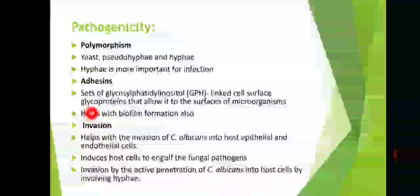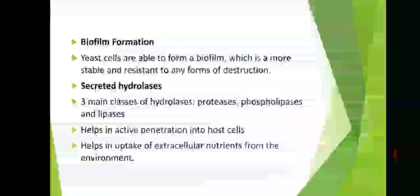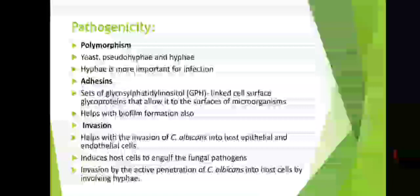Next is biofilm formation. A biofilm is a group of microorganisms that come together and form a rigid structure which is resistant to any external pressure. That structure is called a biofilm. It is basically a polysaccharide structure formed by a group of microorganisms coming together to resist external pressure. Yeast cells are able to form a biofilm which is more stable and resistant to any form of destruction.